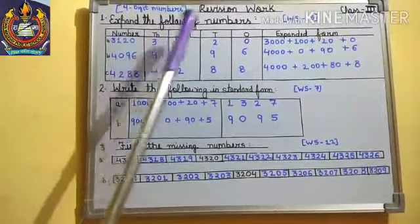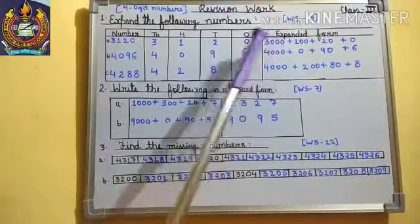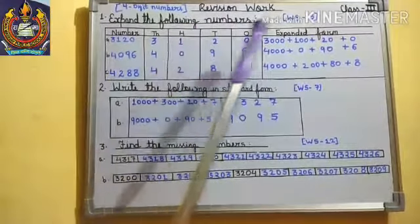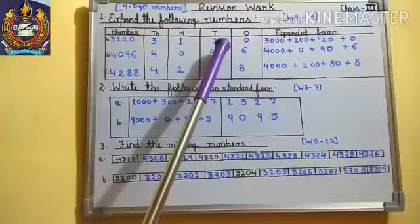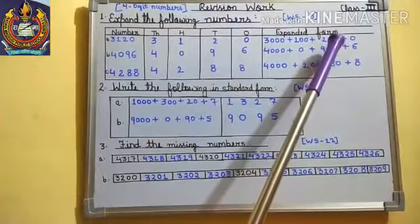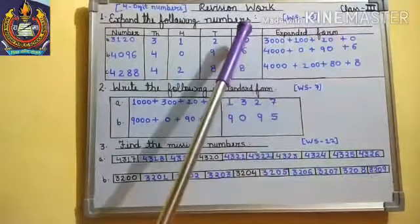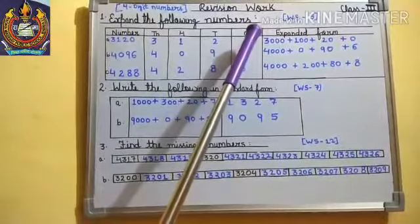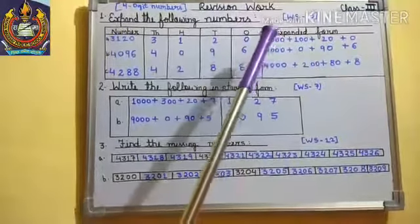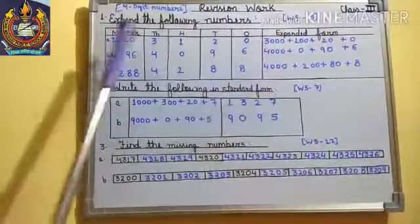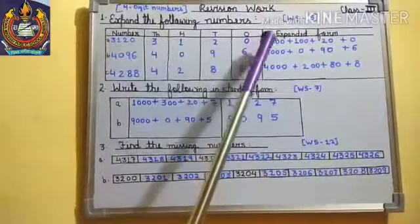So expanded form will be how many thousand? Three thousand. So I write three thousand, one hundred, so plus one hundred. How many tenths? Two tenths, so we will write twenty here. And what will come on ones place? This is zero. So our expanded form for this number is three thousand plus one hundred plus twenty plus zero.